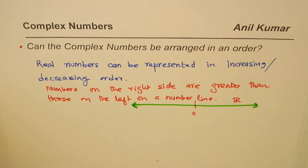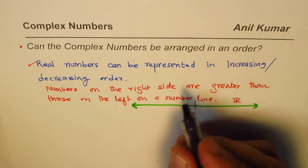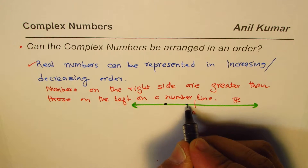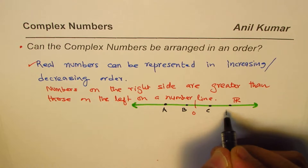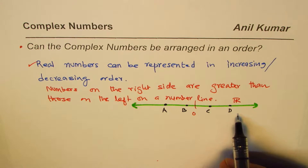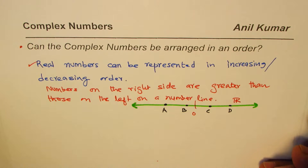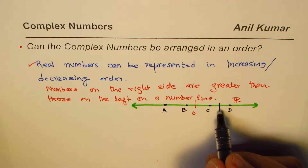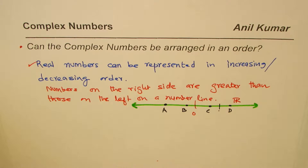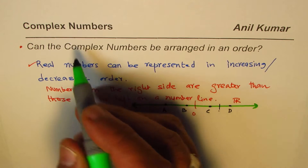Therefore we can represent real numbers in increasing or decreasing order. If we have numbers a, b, c, and d on a number line, we know they are in increasing order since d is on the right. If I have a number e which is between c and d, I can always place it in order.